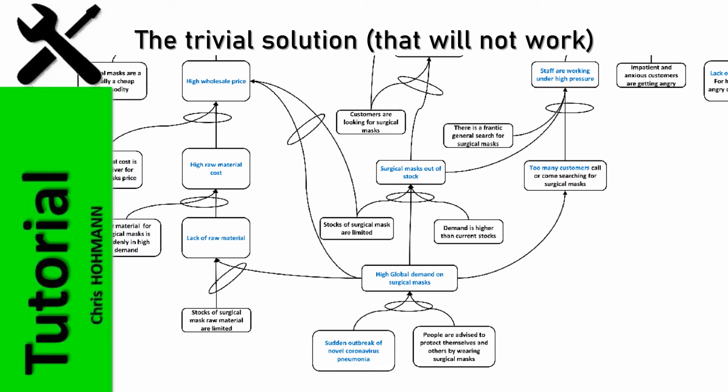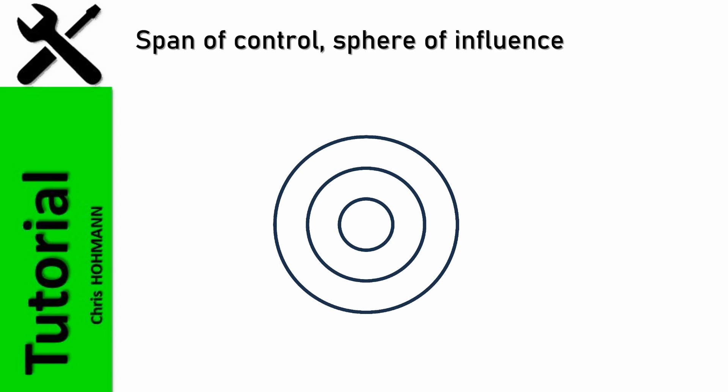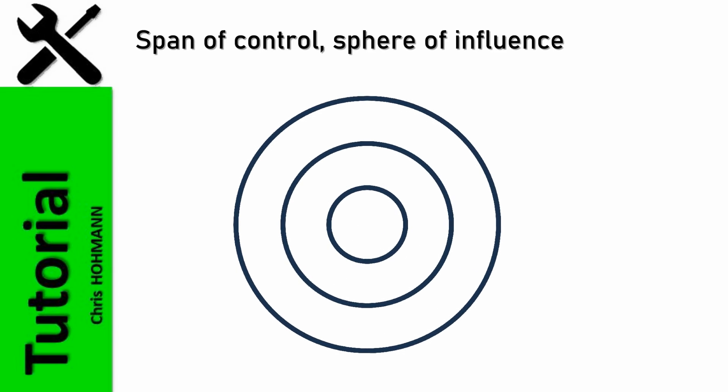This leads us to define the problem's boundaries, meaning where we have control as a company over decisions and actions. In order to solve a problem, at least try to solve it, one must be clear about the system's boundaries.